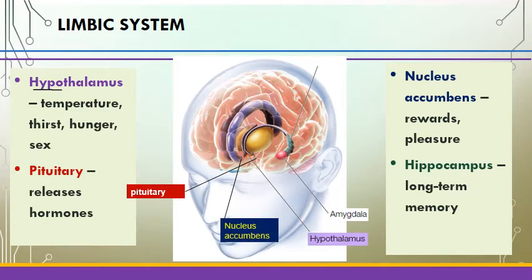The hippocampus is incredibly important because it is responsible for processing long-term memories. It's a rather interesting shaped structure that looks something like a seahorse, or a sort of curly fry shape. Its name — hippocampus — literally means seahorse, which tells us about why the name is the way it is.